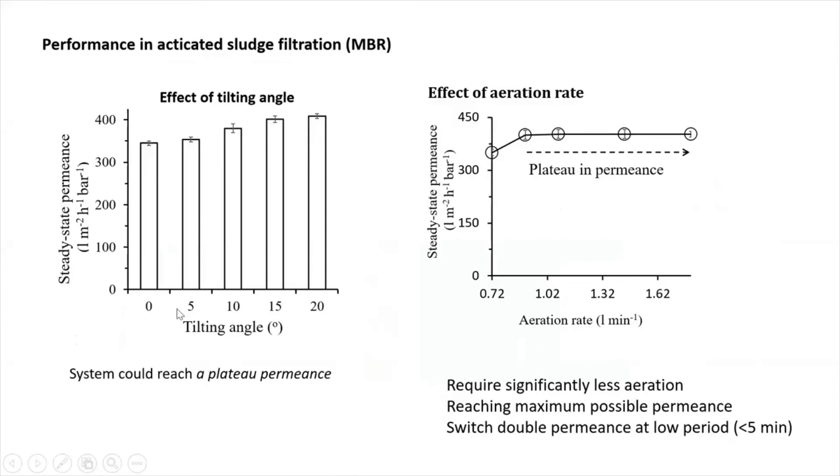We tested for an MBR application. As you can see here, zero means you have vertical modules. If we tilt it up to, let's say, 20 degrees, you can achieve significant increment of the permeability. And then even up to some point, if you manipulate the aeration, you can reach a plateau permeance. The plateau permeance means the maximum permeability you can achieve where there is no fouling in our systems.